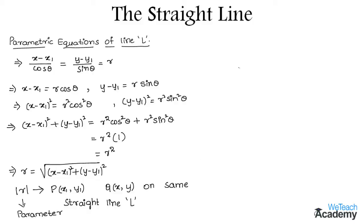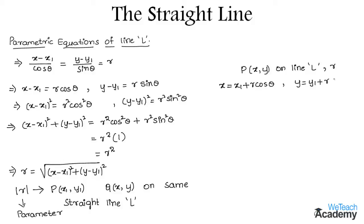Therefore, for a point P(x, y) on the line L, there exists r such that x = x1 + r cos θ and y = y1 + r sin θ. These are the coordinates of point P and are called the parametric equations of a straight line L.